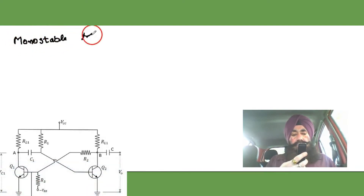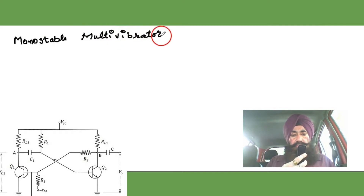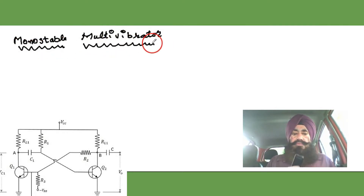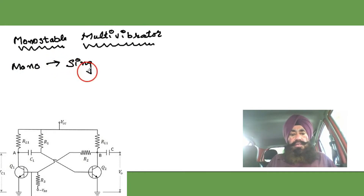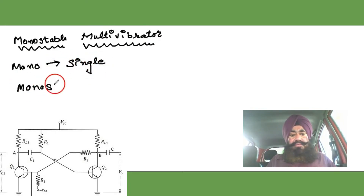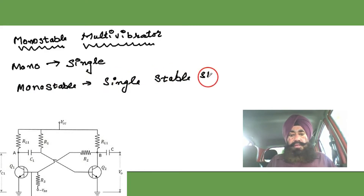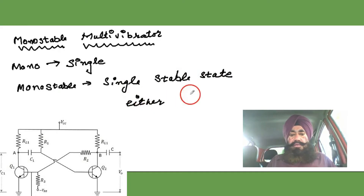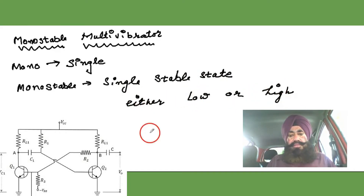Dear friends, today I'll discuss with you the monostable multivibrator. Mono means single — it is an electronic device which has only a single stable state. That single state might be either the low level or the high level; it may be zero or it may be one.